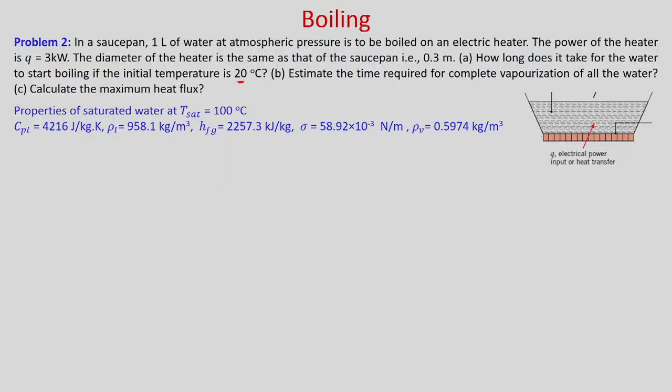We also need to estimate the time required for complete vaporization of all the water, and calculate the maximum heat flux. The properties are given at T_sat equals 100 degree centigrade, and HFG, rho V, and surface tension sigma are from the steam table. One litre of water means 10 to the power minus 3 meter cube.